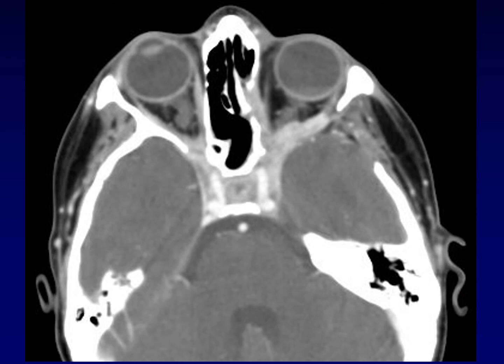One more example of perineural spread, here along the third cranial nerve. You can see all the branches of the third cranial nerve coming together and into the cavernous sinus, just the way we'd expect that nerve to spread. This is actually a lacrimal adenoid cystic carcinoma — and as discussed earlier, the lacrimal gland is really just a modified salivary gland, so it's not surprising to find adenoid cystic carcinoma in that location.